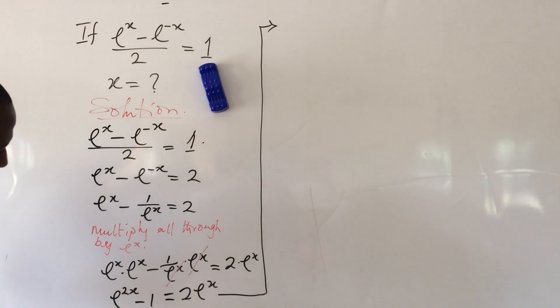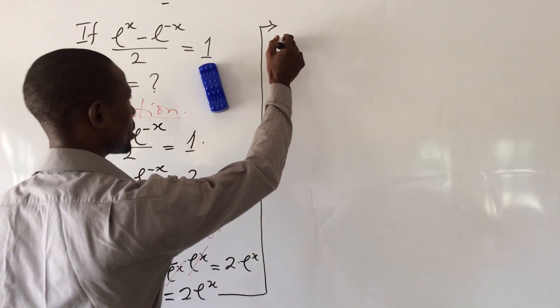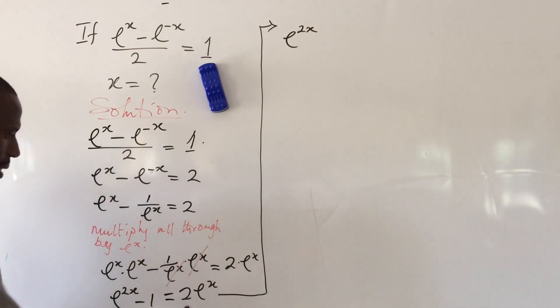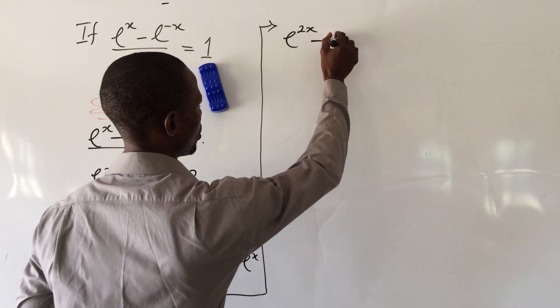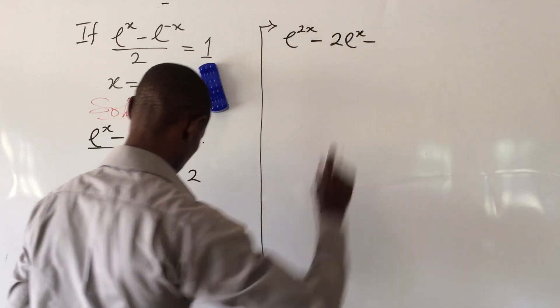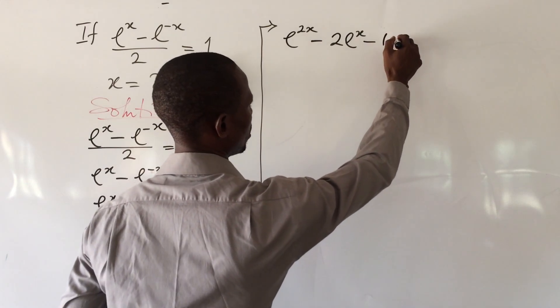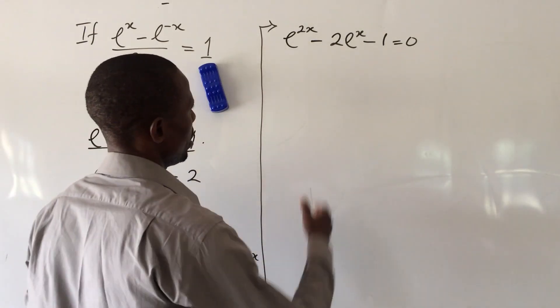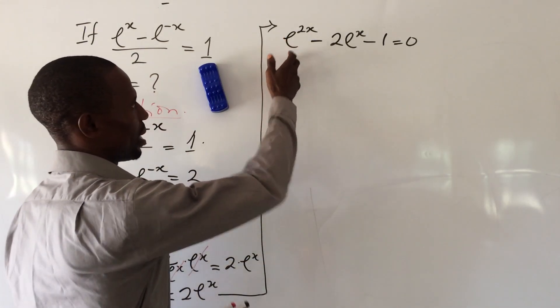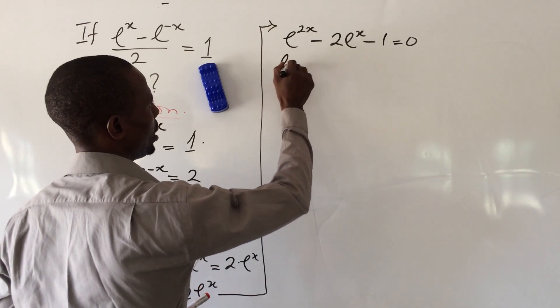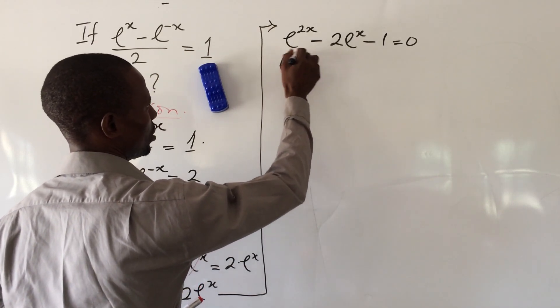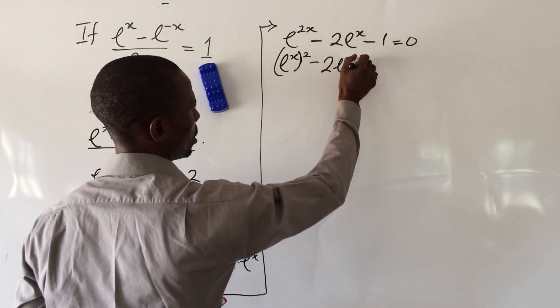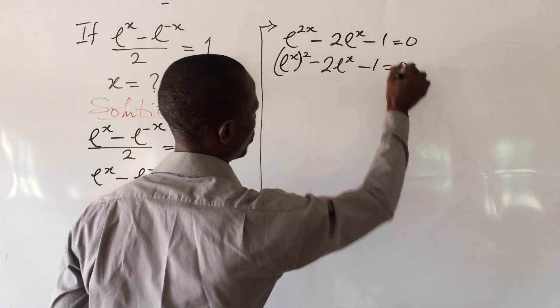If we collect like terms, this now implies e^(2x) - 2e^x - 1 = 0. Now remember that this can also be written as (e^x)^2 - 2e^x - 1 = 0.